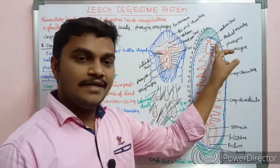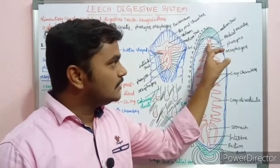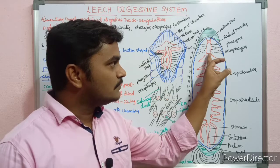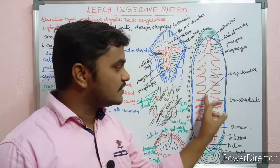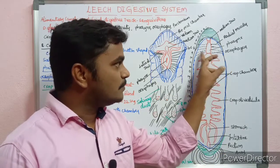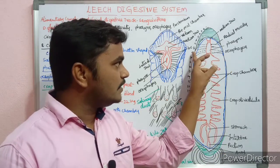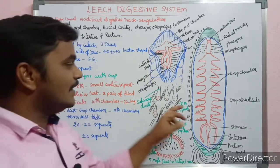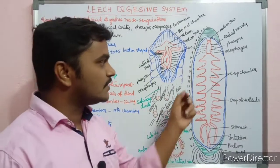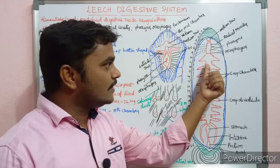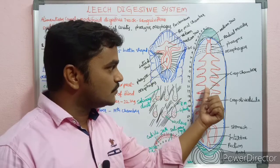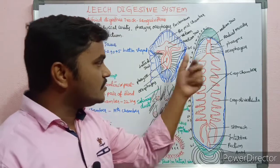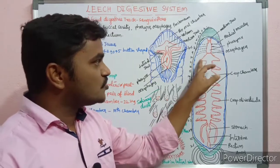There is a presence of radial muscles. The pharynx region opens into the small esophagus, and from there the crop is present. The crop is located in the 9th to the 18th segment. The crop chambers have a narrow anterior region and a broad posterior region.